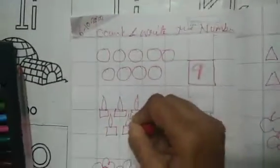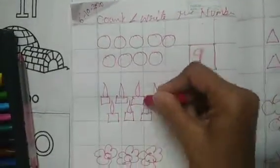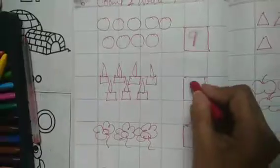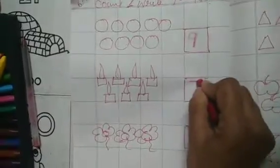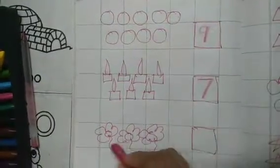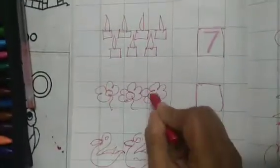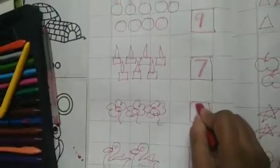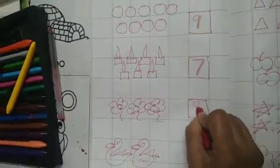1, 2, 3, 4, 5, 6, 7. Seven candles. Number 7. Right here, 7. 1, 2, 3. Three flowers. Right here, 3.